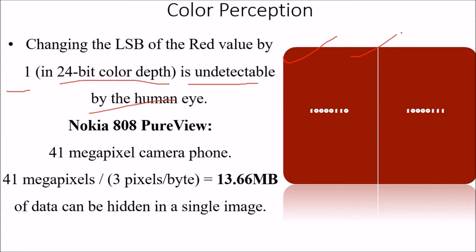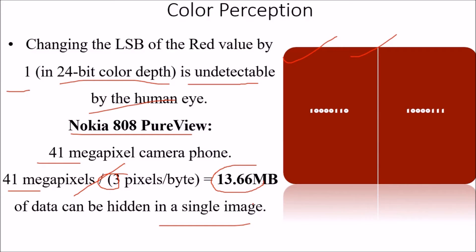For example, with a 41-megapixel camera phone image, using 3 pixels per byte, approximately 13.66 MB of data can be hidden in a single image. That is the capacity of data that can be concealed because we are only using 3 pixels per byte. This is how digital steganography works in practice.